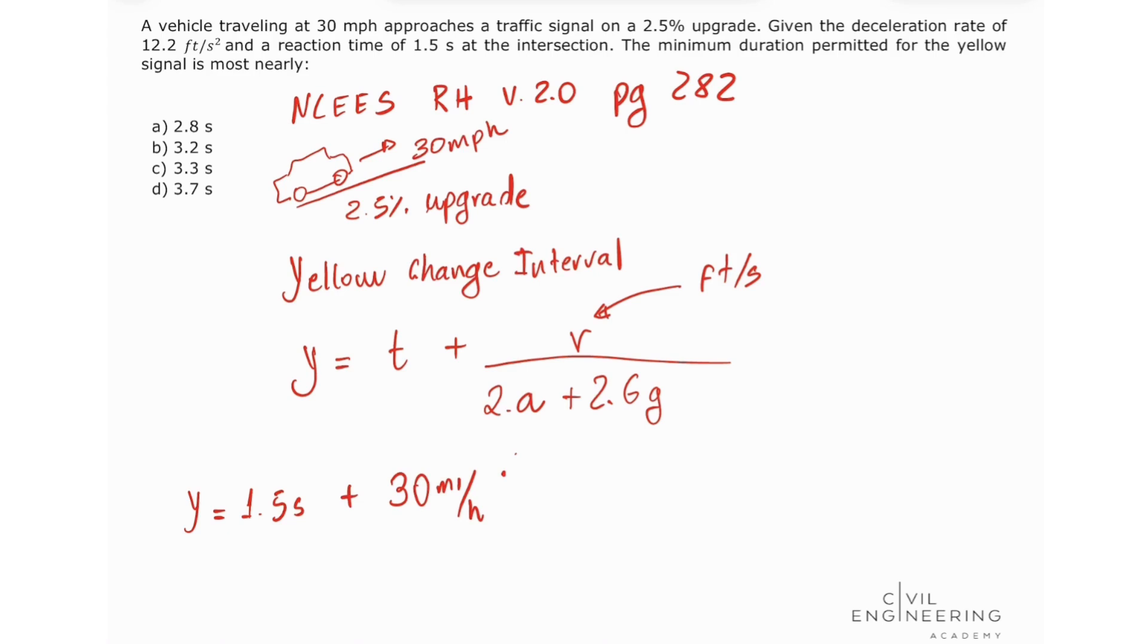We need to do some conversion here. We have 1 hour divided by 3,600 seconds, times 5,280 feet per mile, so we can convert this to feet per second.